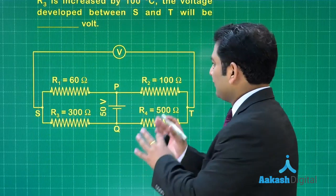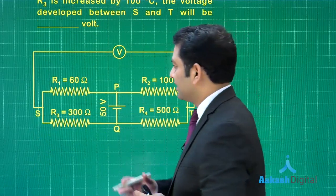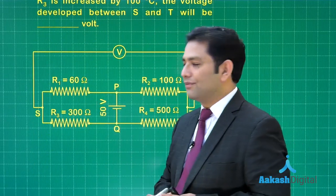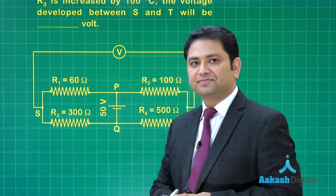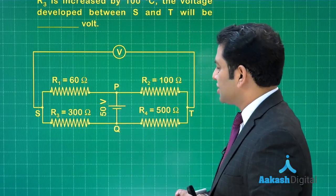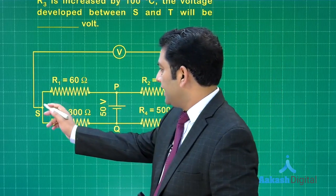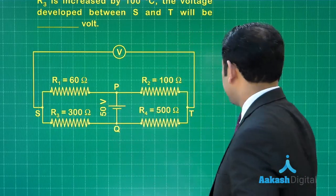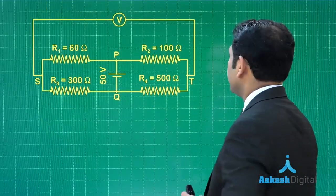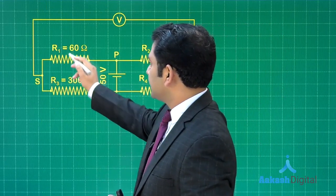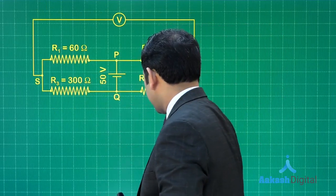Here we will be taking the voltmeter to be ideal, because that is the only option we have. Other information about the voltmeter has not been given. Now see, initially what is the potential difference between point s and q? I will just concentrate about s and q. Now you could see this 50 volt is in series with 60 and 300.